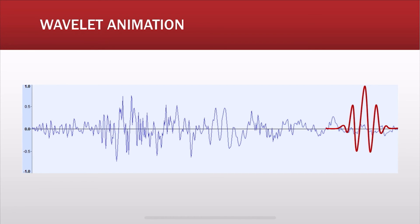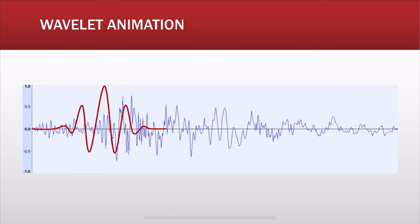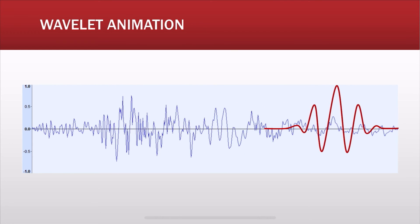If there is no match, then that frequency was not present. This was performed with one wavelet, and now the same thing is performed with different wavelets. For example, let's say we use a stretched wavelet to analyze if there is any low frequency sound present. The x-axis represents time, and as the wavelet slides through the signal, at every time instant it's comparing with the signal.